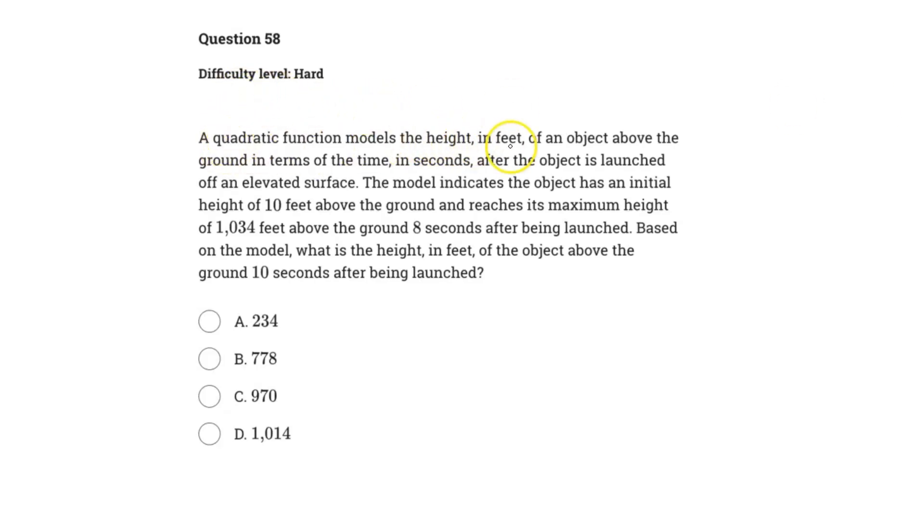So this one says a quadratic function models the height in feet of an object above the ground in terms of time in seconds after the object is launched off an elevated surface. The model indicates the object has an initial height of 10 feet off the ground and reaches its maximum height of 1034 feet above the ground 8 seconds after being launched. Based on the model, what is the height in feet of the object above the ground 10 seconds after being launched?